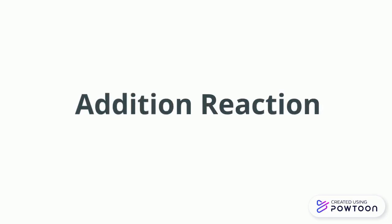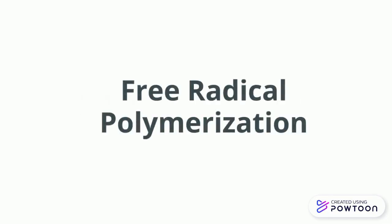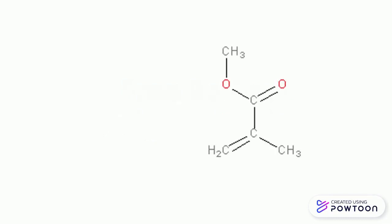The PMMA polymer is formed through a general reaction called an addition reaction. The specific process that causes the formation of PMMA is called free radical polymerization. In this process, a methylmethacrylate monomer is combined with a free radical initiator. Think of this like a spark that starts the whole polymerization reaction.